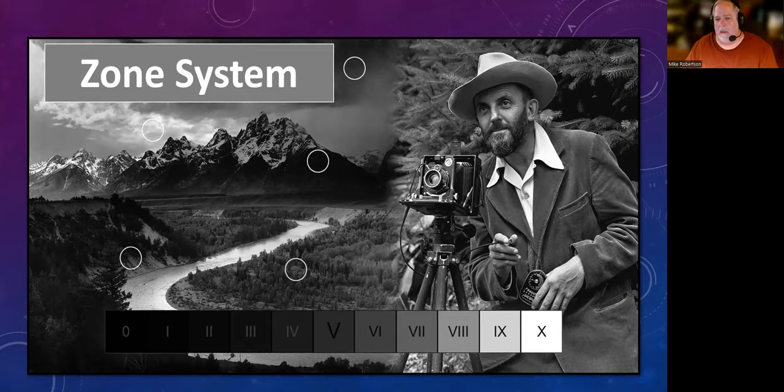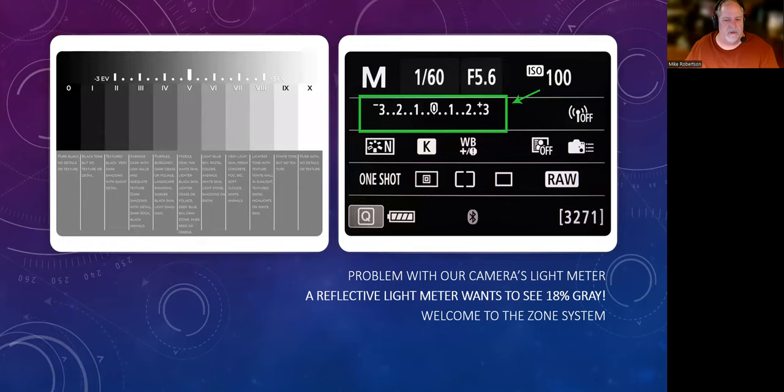Even though the lighting may be almost identical in both situations, the camera's going to read it differently because of the reflective light. So that becomes the problem. And we talk about the zone system from Ansel Adams. So I've got a bigger picture of this, but this is something that I just wanted to kind of show you.